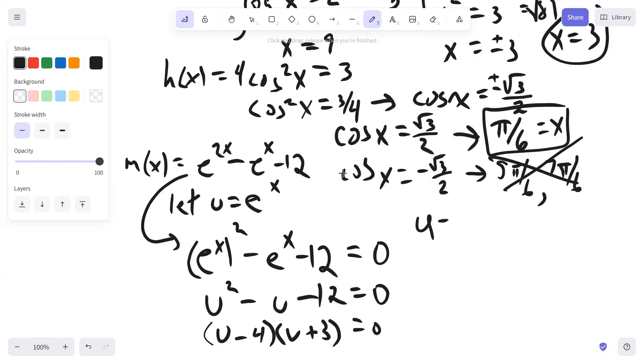Then we could factor this into U minus 4 times U plus 3 equals zero. Then we take each factor. U minus 4 equals zero. So U equals 4. And if U is E to the X, then E to the X equals 4. Take the natural log of both sides. X equals natural log 4.